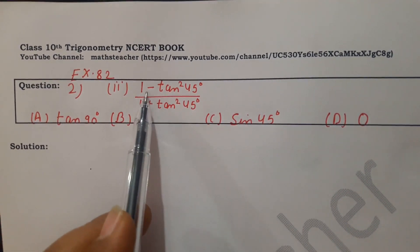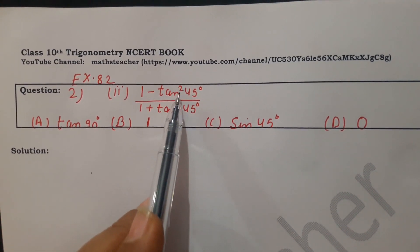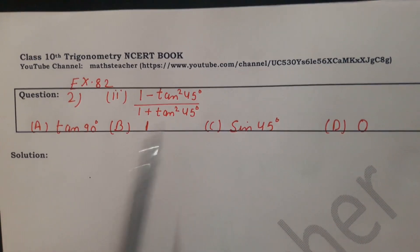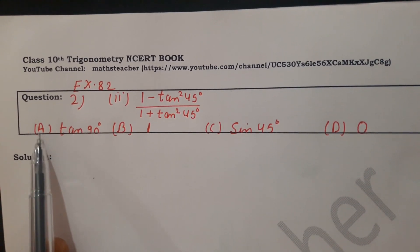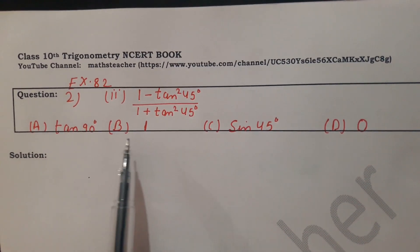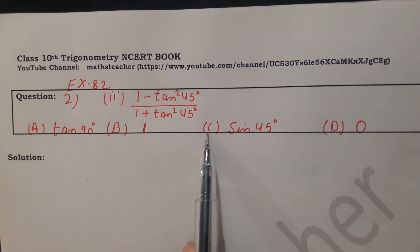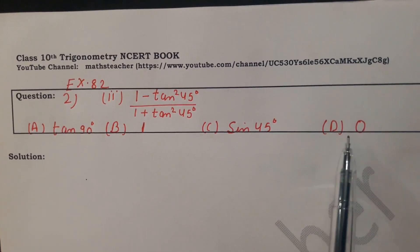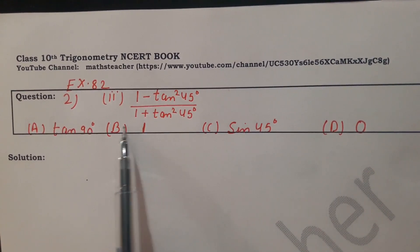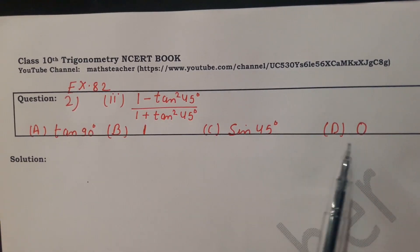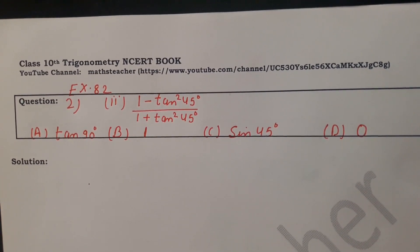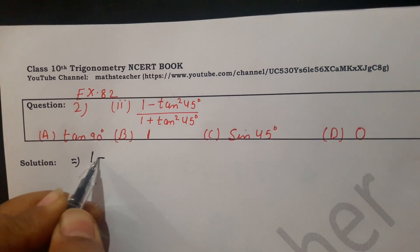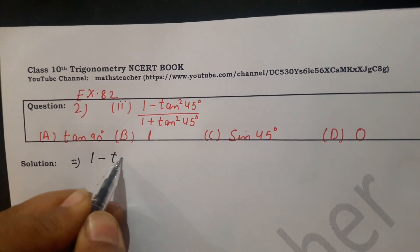The 2nd part is: (1 - tan²45°) / (1 + tan²45°). The four options are: option A is tan90°, option B is 1, option C is sin45°, and option D is 0. We have to check which is the right option, and for this we need to check the value of tan45° from the table.